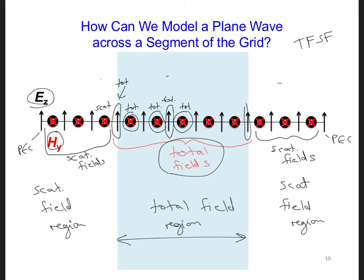So what can we do about this? More specifically, how might we update this EZ component right at the interface between the total and the scattered field regions?